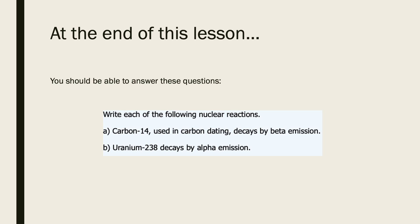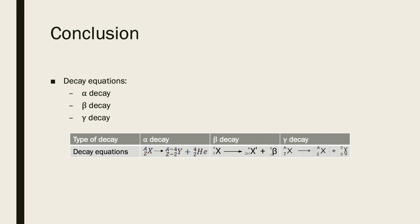Let's look back at the learning outcomes from the beginning of our lesson. The question asked us to write the nuclear reactions for carbon-14 and uranium-238, where one decays by beta emission and the other by alpha emission. After going through the equations for alpha, beta, and gamma decay and the examples, you should be able to answer this question easily. Congratulations — our learning outcome has been achieved!